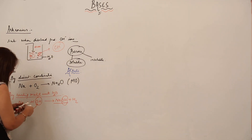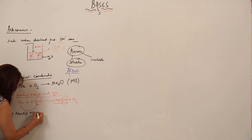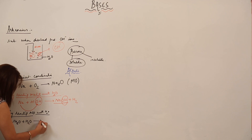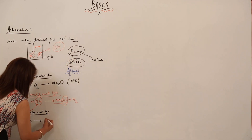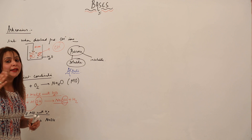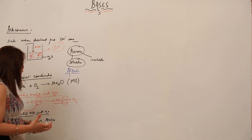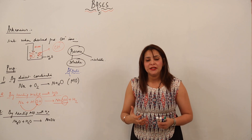The third method is by reacting metal oxide with water. For example, reacting sodium oxide with water — any substance reacting with water combines with the hydroxide ion — so it forms NaOH. Note that when reacting an oxide with water you do not get hydrogen gas, but when you react a metal with water you do get hydrogen gas.